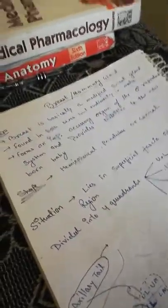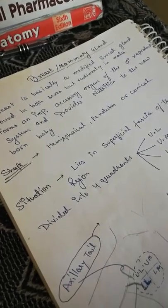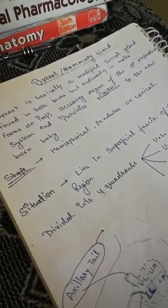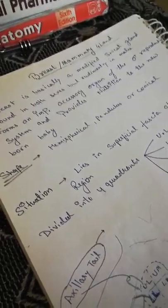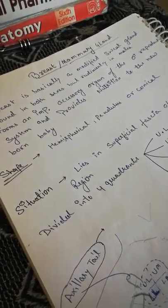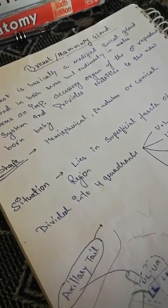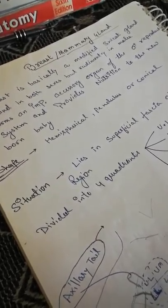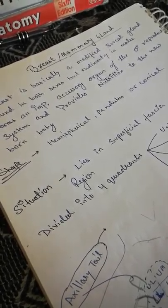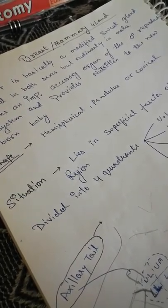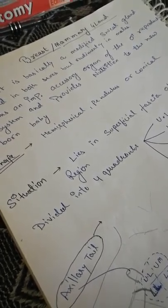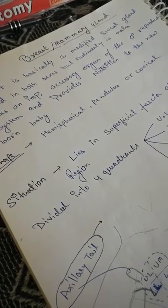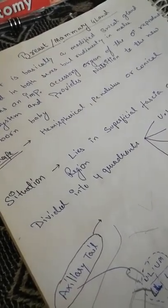Hi friends, my name is Ankit and I'm here to share my video on breast or mammary gland. Breast or mammary gland is one of the most important topics in medical studies, important in first year and second year also. Here is the anatomy of breast — I hope it may be useful for you. The most important topic from an examination point of view is the lymphatic drainage of the breast, which I'm covering later. Here is the general anatomy of breast, also known as mammary gland.